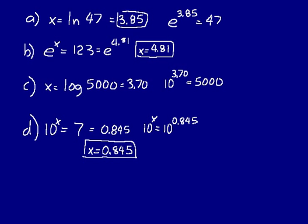When we find the logarithm of a number, we're finding the exponent of the base raised to that power that would equal that number. So taking the log of 7 finds the exponent for a base of 10 that would equal 7; log of 5,000 finds the base 10 exponent equaling 5,000; and the natural log of 123 finds the exponent for a base of E, or 2.718, that would equal 123.